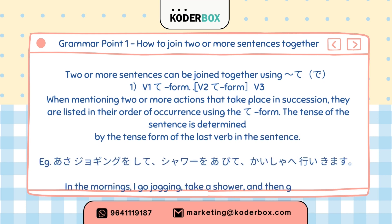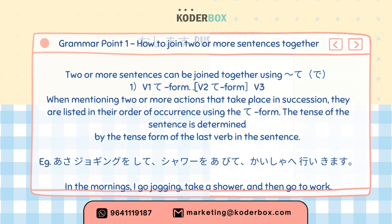Grammar 1: Verb 1 te-form, Verb 2 te-form, Verb 3. When mentioning two or more actions that take place in succession, they are listed in their order of occurrence using the te-form. The tense is determined by the last verb. Example: Asa jogingu wo shite, shawa wo abite, kaisha e ikimasu — In the morning, I go jogging, take a shower, and then go to work.